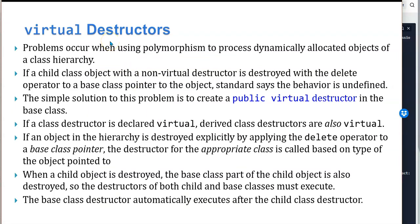Problems occur when using polymorphism to process dynamically allocated objects of a class hierarchy. If a child class object with a non-virtual destructor is destroyed with the delete operator, the standard says the behavior is undefined — what happens depends on the implementation of C++ being used. The simple solution is to create a public virtual destructor in the base class. If a class destructor is declared virtual, derived class destructors are also virtual. If an object in the hierarchy is destroyed explicitly by applying the delete operator to a base class pointer, the destructor for the appropriate class is called based on the type of the object. When a child object is destroyed, the base class part of the object is also destroyed, so the destructors of both child class and base class must execute. The base class destructor automatically executes after the child class destructor.